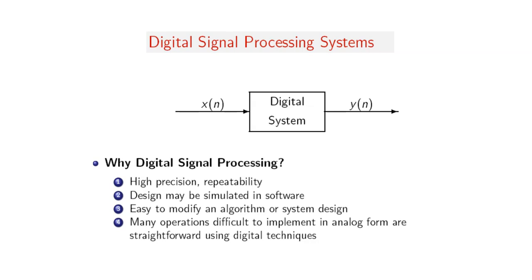Why do we need digital signal processing? There is high precision, repeatability, the design may be simulated in software, it is easy to modify an algorithm or system design, and many operations difficult to implement in analog form are straightforward using digital techniques. These are the benefits of digital signal processing compared to continuous signal processing. For digital, we can work with processors that can be updated and improved using software, whereas continuous-time processors are difficult to update and have limited frequency applications.